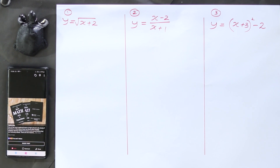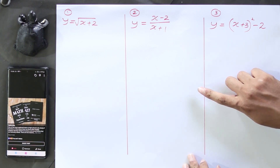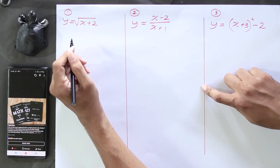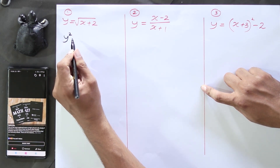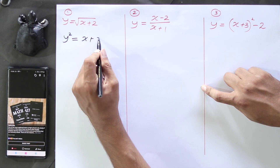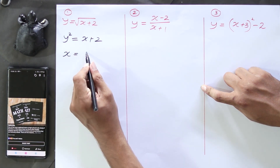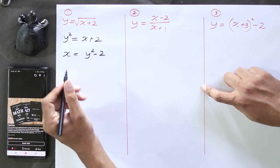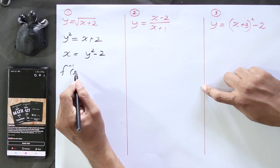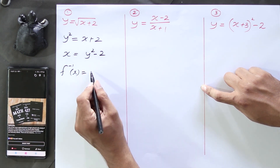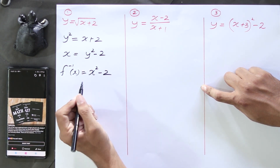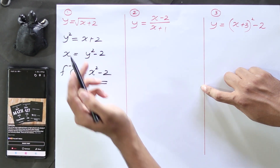Let's look into these examples. First question: y equals root of x plus 2. To find the inverse function we subject x by squaring both sides: y squared equals x plus 2. Then we subject x to get y squared minus 2. Instead of x we write f inverse of x, and instead of y we replace x. So the inverse function is x squared minus 2. That is the inverse of y equals root of x plus 2.